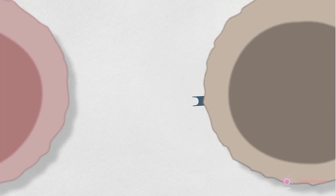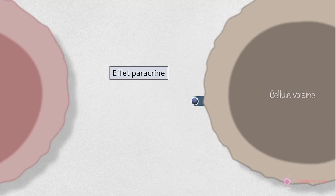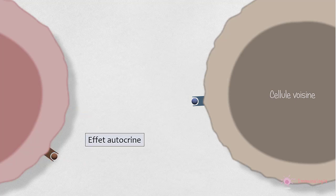Les cytokines peuvent être décrites en fonction de la distance entre la cellule sécrétrice et la cellule réceptrice. Les cytokines qui agissent sur les cellules proches sont appelées paracrines. Parfois, une cellule a besoin de recevoir un signal via ses propres récepteurs d'une cytokine qu'elle a elle-même sécrétée. Ce type de signalisation est appelé autocrine.